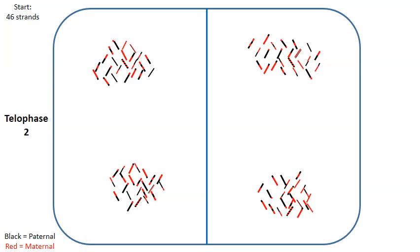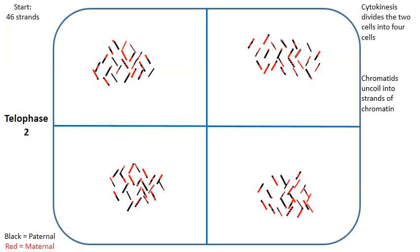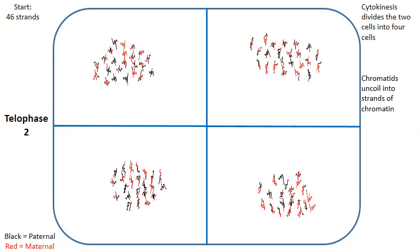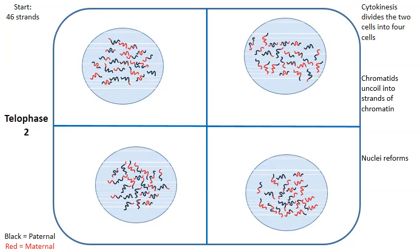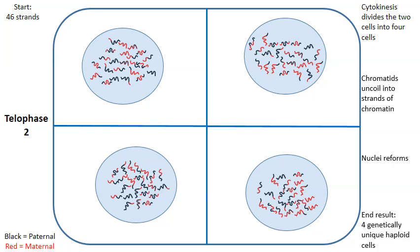And so as we near the end, we come to telophase number two. Cytokinesis divides the two cells into four cells. The chromatids will uncoil into the loose linear strands of DNA known as chromatin. The nuclei will reform in all four of the cells. And so when we're done here, notice what we have. We have four genetically unique haploid cells. They're genetically unique because we experienced crossing over earlier. And they're haploid because notice in the upper left-hand corner, we started with one cell that had 46 strands of DNA. But now these cells that are created only have 23 strands of DNA. And I'd like to prove that to you right now.